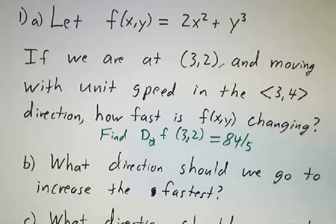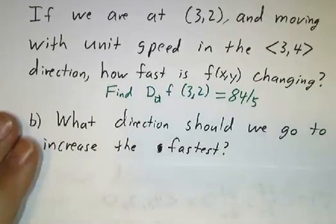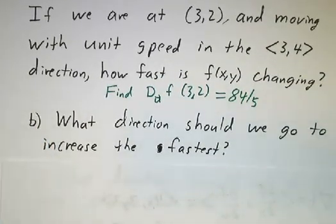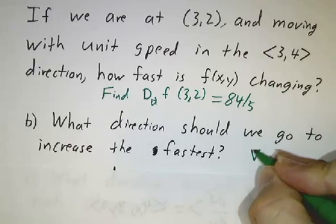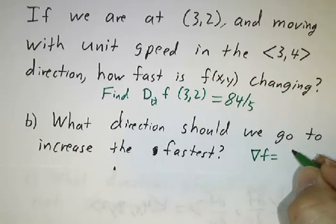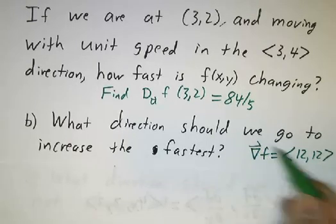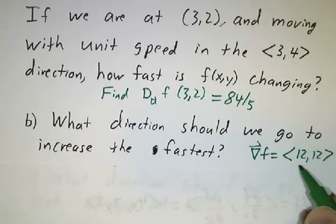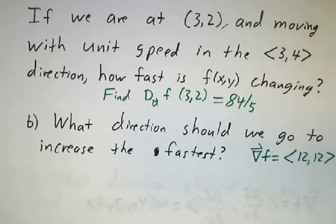But that's not the entire question. The next question is: what direction should we go to increase the fastest? The direction you want to go to increase the fastest is always the direction of the gradient. The gradient we already figured out was (12, 12). So if you head in the direction of (12, 12) — in other words, due northeast, heading north as much as you head east — you're going to increase the fastest.